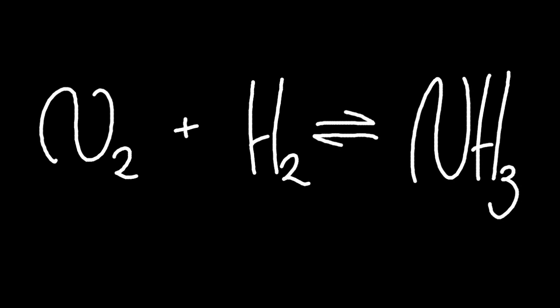Next up is the Haber process. Just balance that out. To make ammonia, you need an iron catalyst. Why would you want to make ammonia? Ammonia is a toilet cleaner, isn't it?